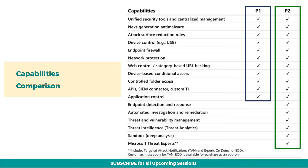Application control, that is designed to protect devices against malware and other untrusted software, prevents malicious code from running by ensuring that only approved code can be run. This is available in both plans as well.